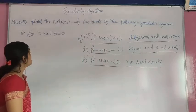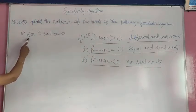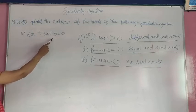Ab isko solve karte hai. Solve the quadratic equation 2x² - 3x + 5 = 0. Comparing this equation...